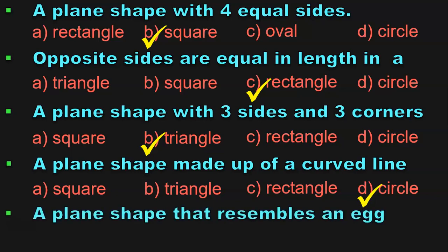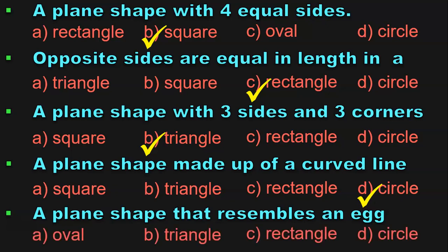A plane shape that resembles an egg — the correct answer is an oval. Hope you found this activity interesting and useful. Let us move on to the next activity: complete the patterns.